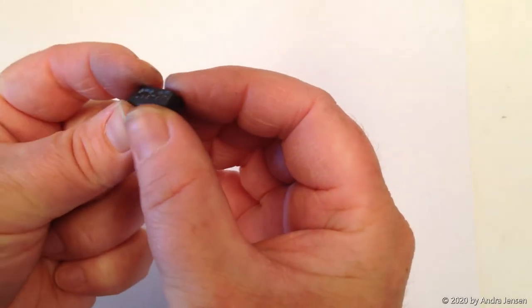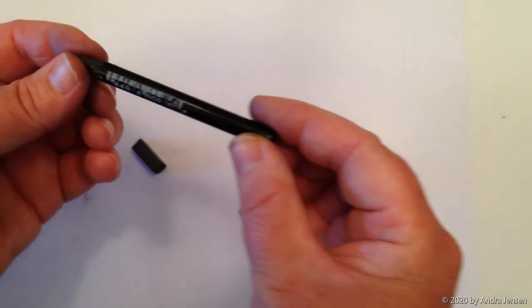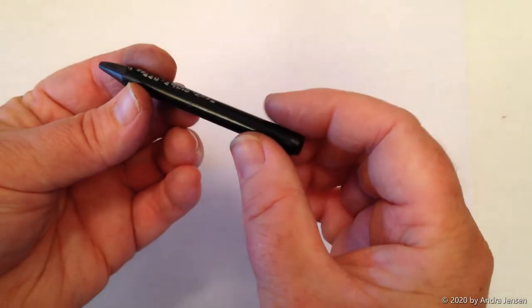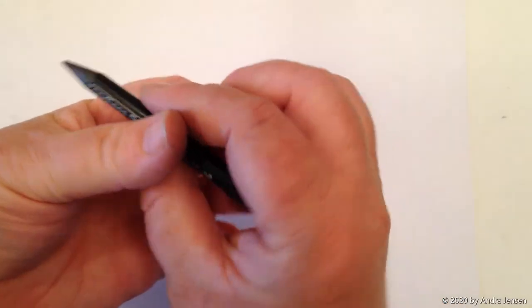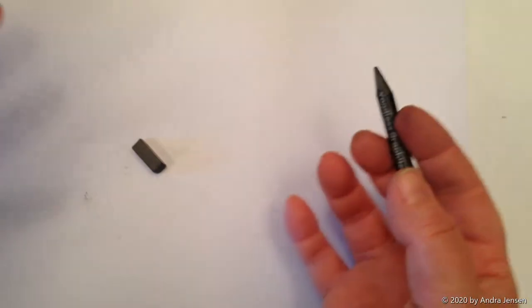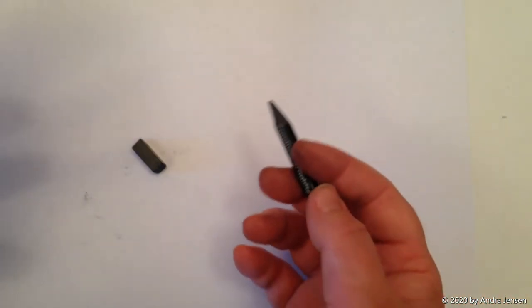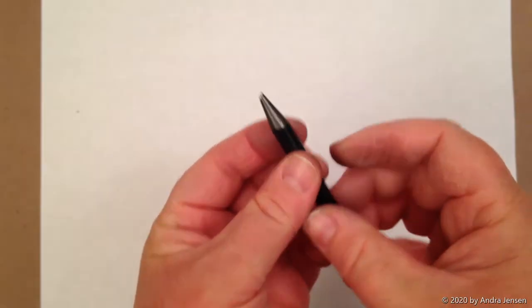Graphite sticks usually come without a coating. Woodless graphite pencils come with a coating. It's a paint coating and it helps keep your fingers clean and everything else on the inside of your drawing kit. They sharpen up really nicely.